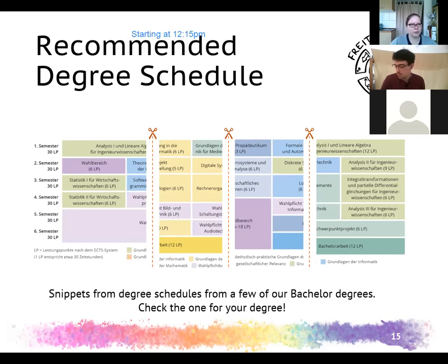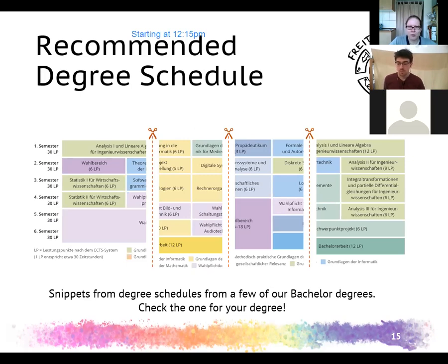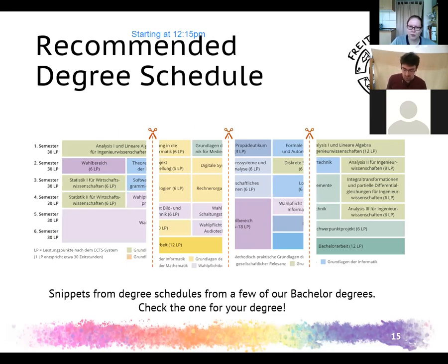Every degree contains a recommended degree schedule — in German a Musterstudienplan. We have a graphic with snippets from bachelor degrees showing the structure and details. The recommended schedule tells you in which order to do things, but in master's degrees with mostly compulsory electives there's not a fixed structure. It's always a recommendation, not mandatory to follow exactly — your final thesis is listed at the end but not absolutely required to be done last.